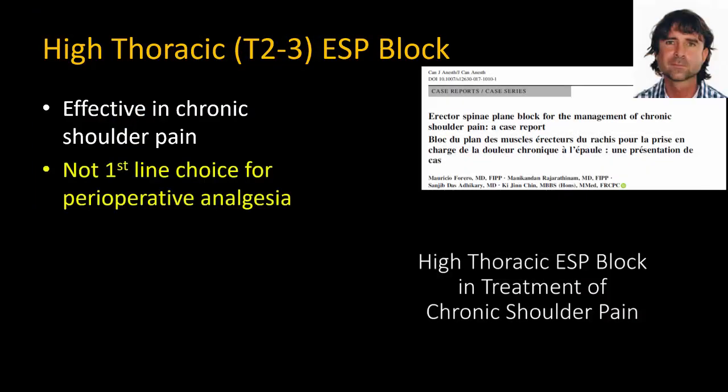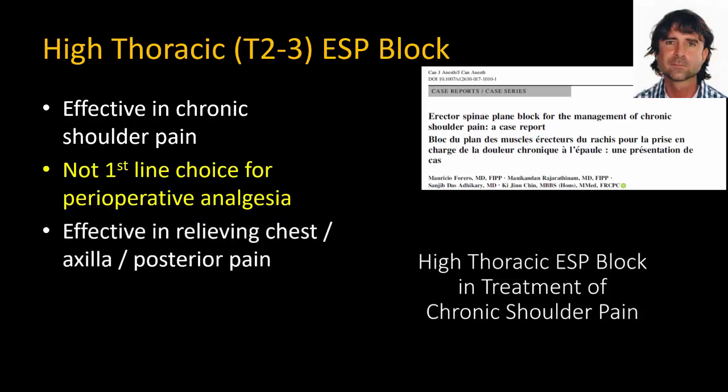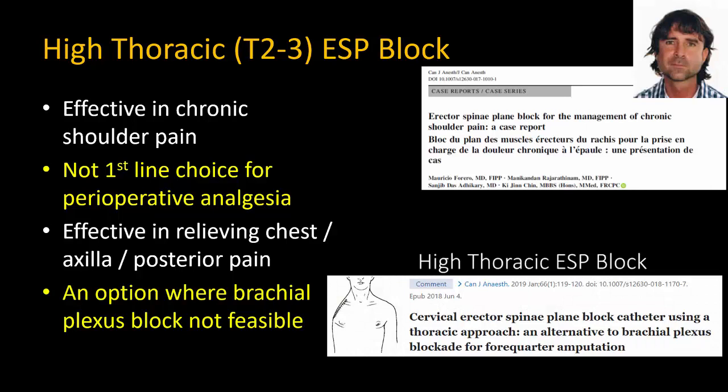I do not consider it a primary replacement for a C5-6 root block like an interscalene or superior trunk block in shoulder surgery. These will provide a denser block and much better analgesia, although at the expense of motor block of the upper limb. However, where I and others have found it extremely useful is as a complement to brachial plexus blocks, in particular as a rescue technique for postoperative pain after complex arthroscopic shoulder surgery, especially pain in the chest or axilla. It's also an option for surgeries of the upper limb and shoulder where a brachial plexus block may not be suitable or feasible.